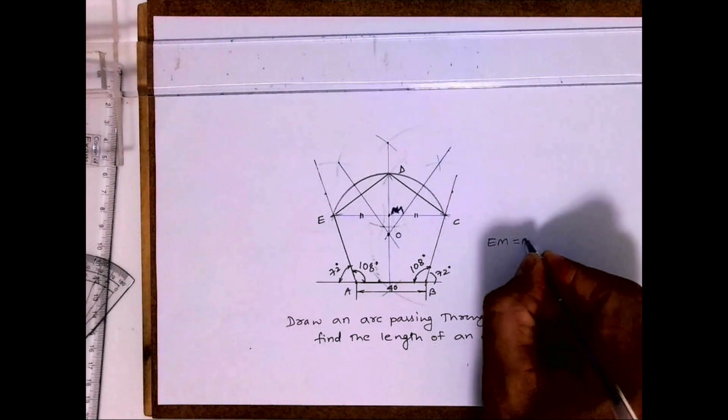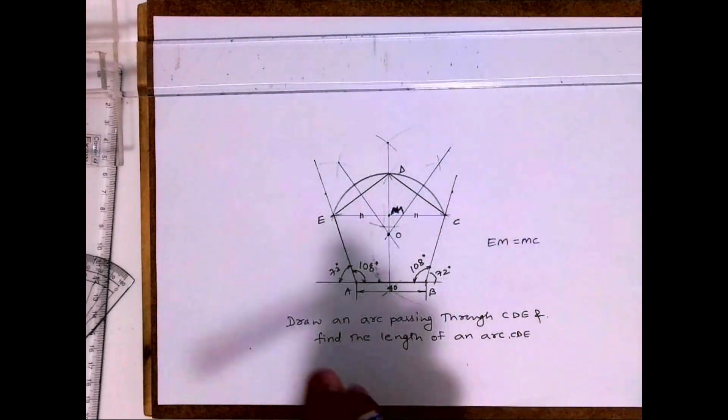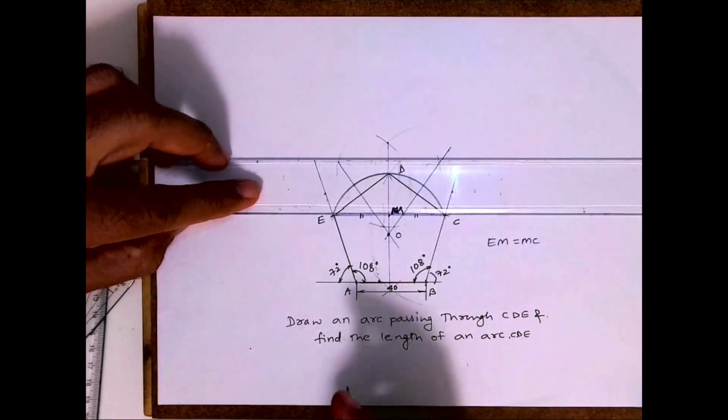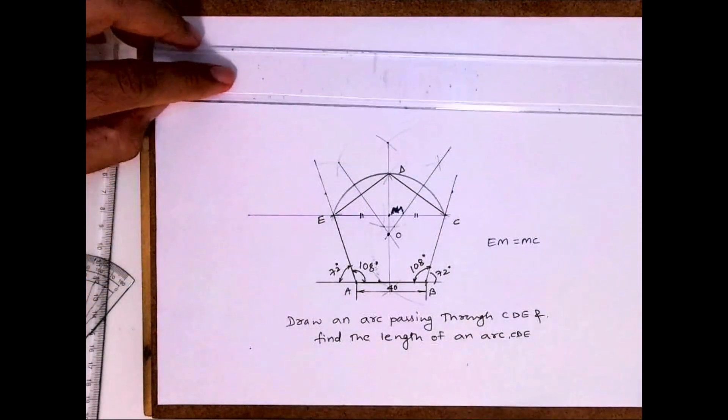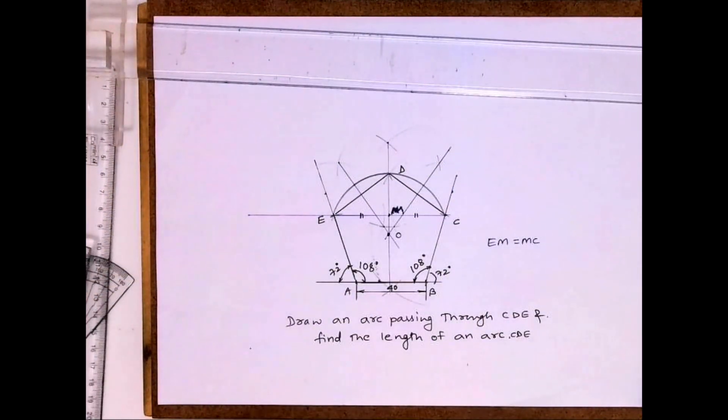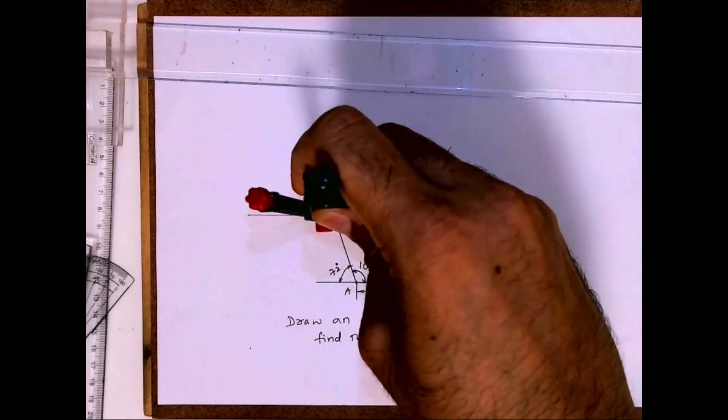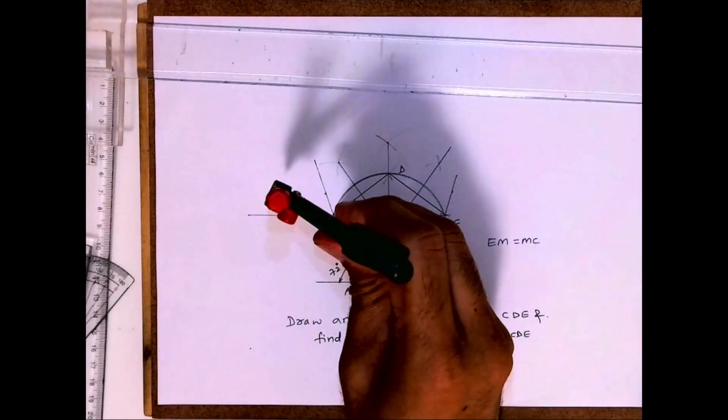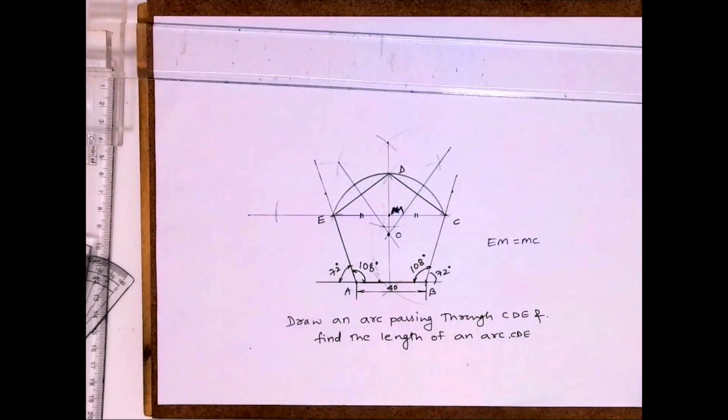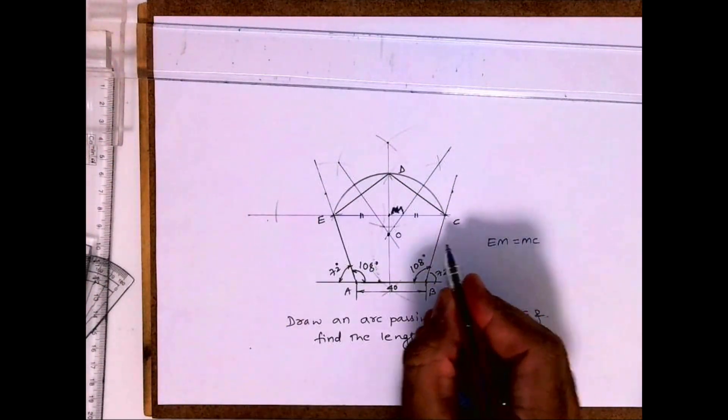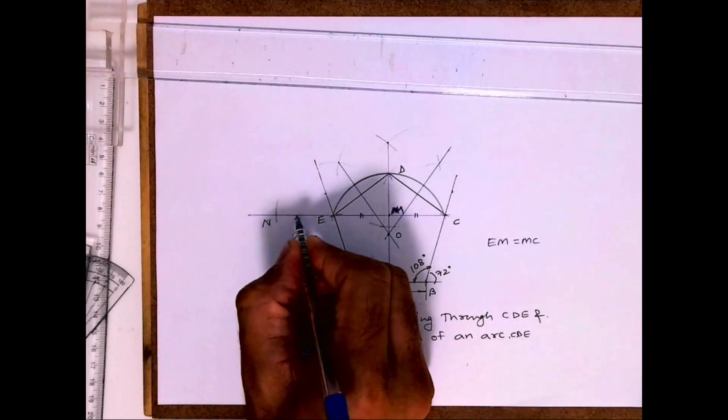So EM is equal to MC. Now I'll extend this line. I'll take EM and I will cut it over here. I'll get point, let's say this is point N.